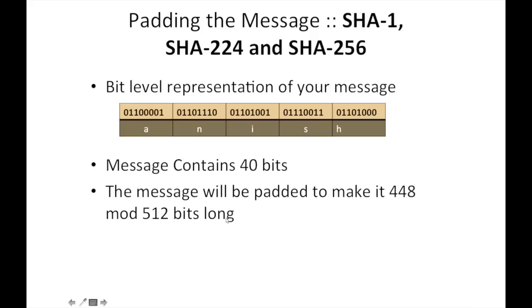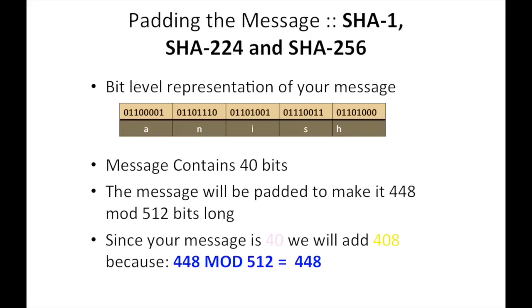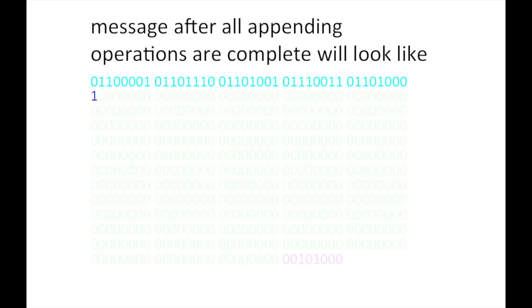To make a 512-bit block, we append zeros. Since 448 mod 512 is 448, we add 407 zeros. As shown, the message 'anish' is represented in red, then we append a '1', followed by 407 zeros, and finally append the length of the message. This makes the 512-bit block, which is passed to the SHA algorithm to produce a message digest.